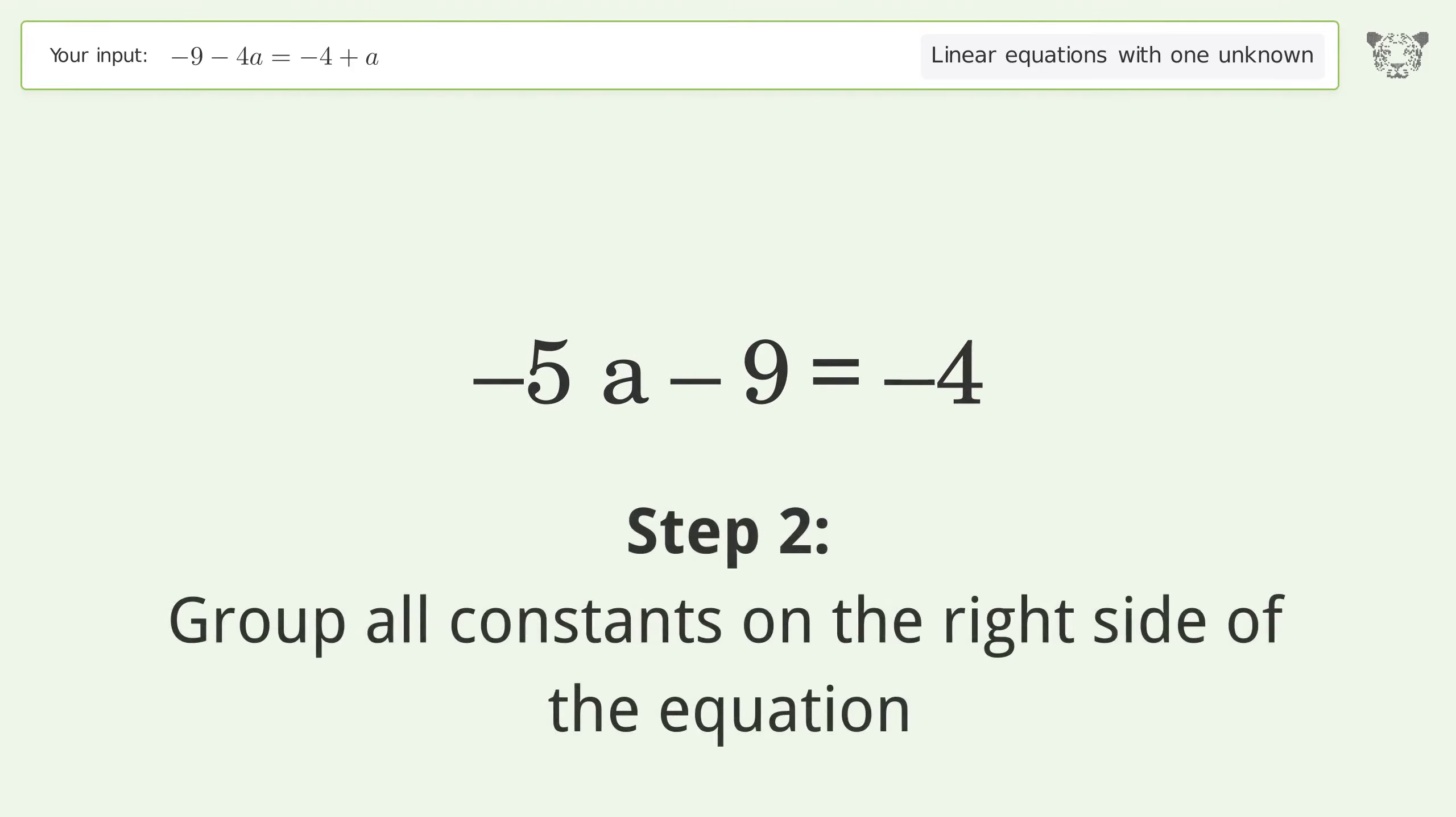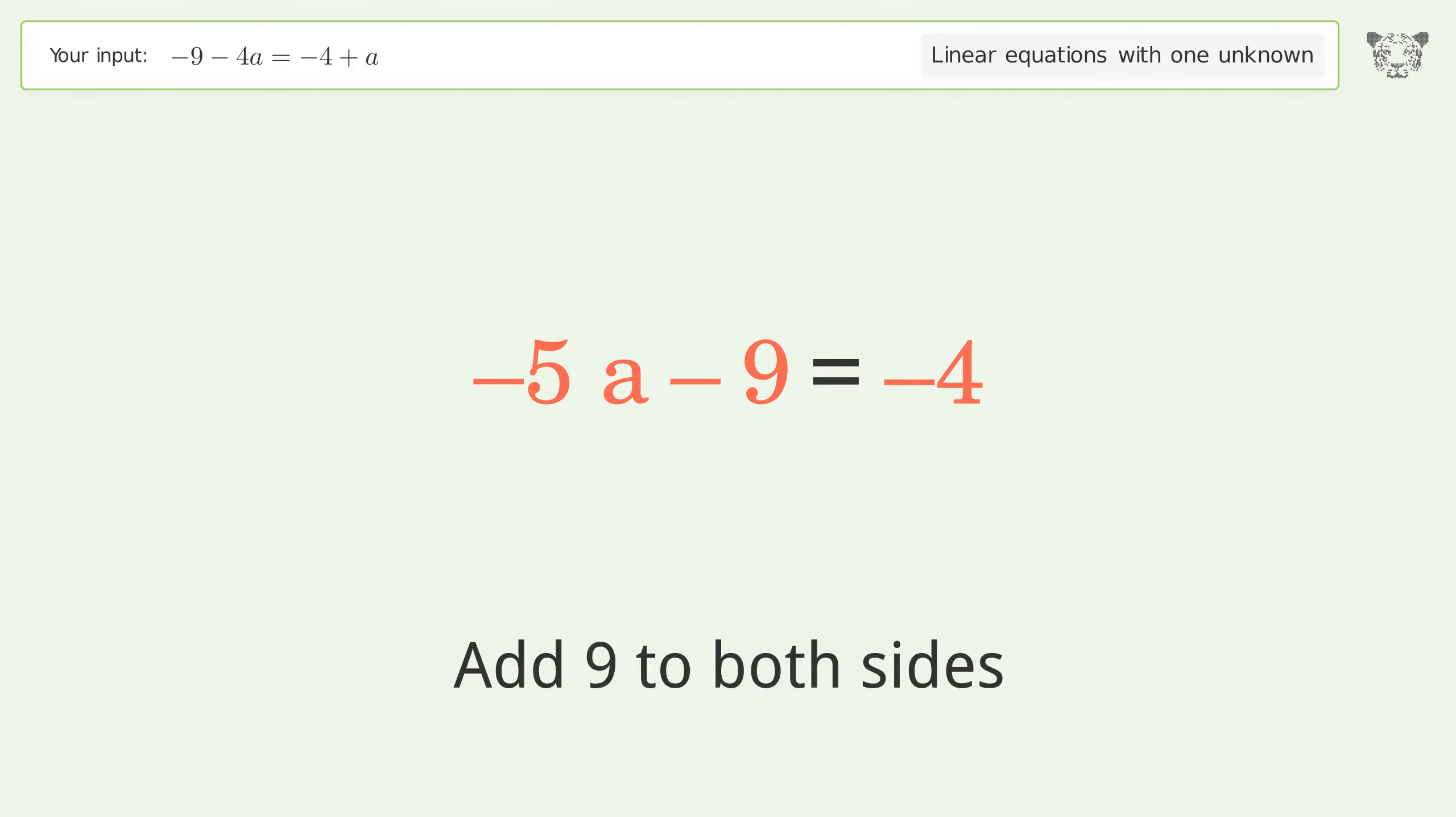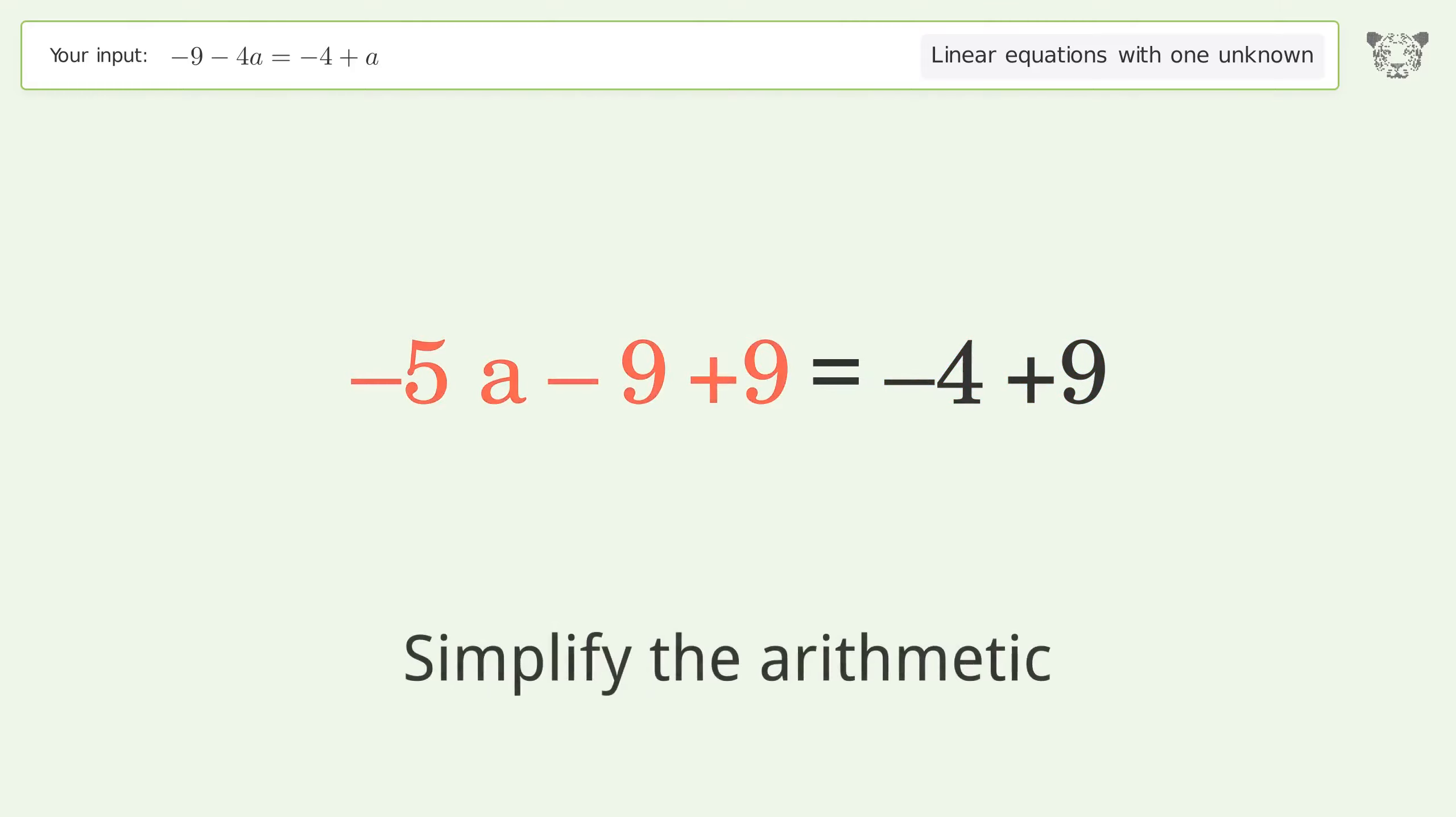Group all constants on the right side of the equation. Add 9 to both sides. Simplify the arithmetic.